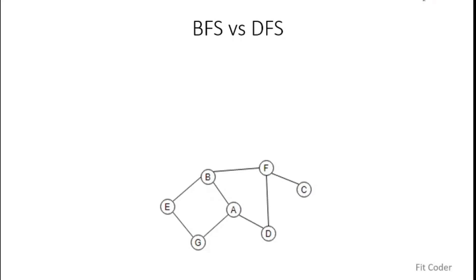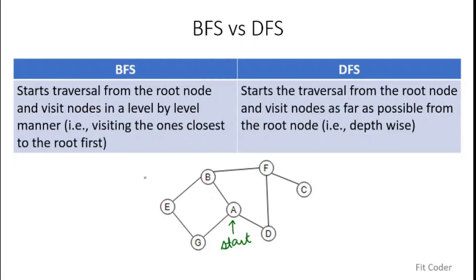BFS means breadth first search and DFS means depth first search. Let's say we are starting the traversal from A and we have to do a BFS traversal of this graph. In BFS, we start the traversal from the root node and visit nodes in a level by level manner. If we start from A, we have to traverse all the nodes that are at equal distance from the root node. The equal distance nodes here are B, G, and D — all at one edge distance from the root node. So if we do the BFS traversal, first we'll write A, then B, then D, then G.